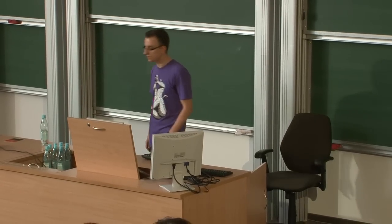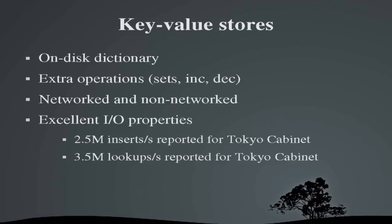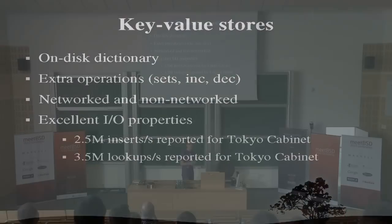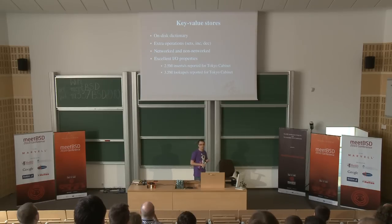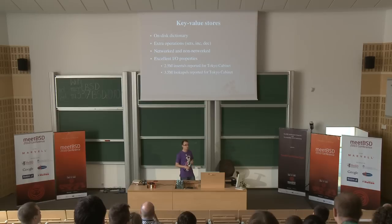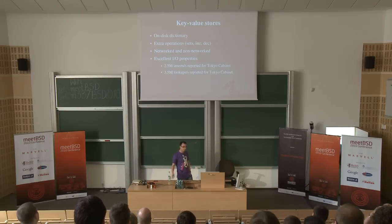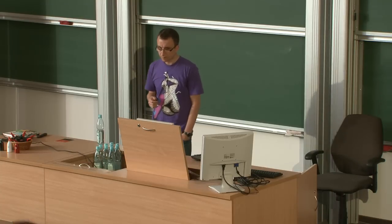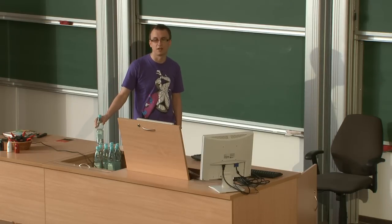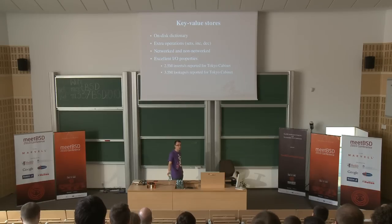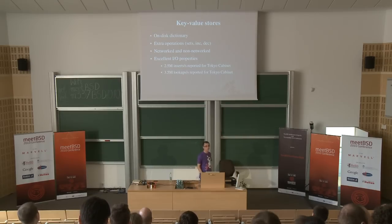Key-value stores are basically on-disk dictionaries — persistent pairings of entities. Some engines allow extra operations like set operations, and atomic increment/decrement of values. There are networked and non-networked engines — Tokyo Cabinet has Tokyo Tyrant for networking. In terms of I/O, some are really good performers — two and a half million inserts per second is decent, and very hard to obtain on a relational database.